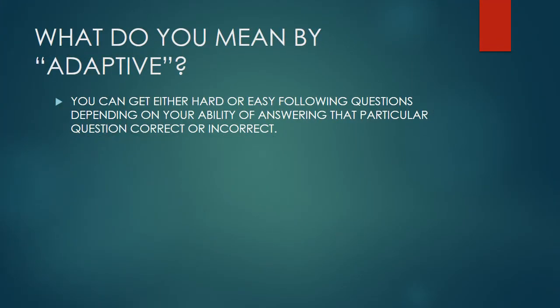So what do you mean by the word adaptive? In an adaptive test, each question you see is based on your performance and the questions prior. For instance, as you answer questions correctly, the test presents you with more difficult ones. Whenever you answer a question incorrectly, the question will return to an easier level of difficulty until you are able to answer them correctly again.